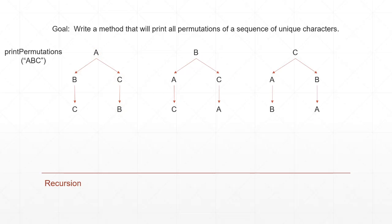Our method, printPermutations, is going to take a string of characters — in this case ABC. What we'll do is take the A, explore all the branches, then take B, then C. We take A off our string and say: give me all the permutations with just B and C. Each of those will have A in front — A followed by whatever permutation we can find using just B and C, which is either B-C or C-B. We keep the same approach by choosing the first letter and moving to the next.